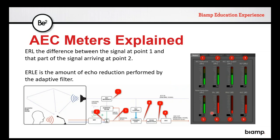ERL — echo return loss — is basically the difference between the signal at the input and the reference signal component showing up there. You want that level ideally between plus 5 and plus 10 dB; zero to plus 15 is still acceptable. ERLE — echo return loss enhancement — is the actual amount of reduction the adaptive filter is performing at that moment. As the far end talks, watch this meter go up to the 20 to 30 dB range if it's working correctly. All meters are RMS, which is different from the peak meters in the main DSP, so there will be a slight level difference when comparing.